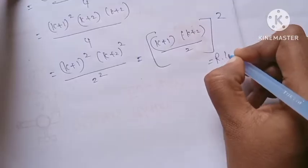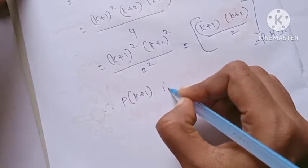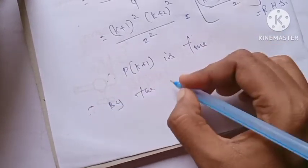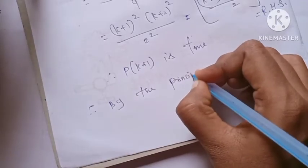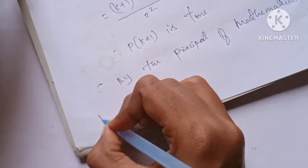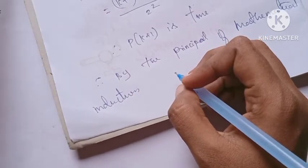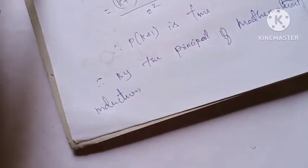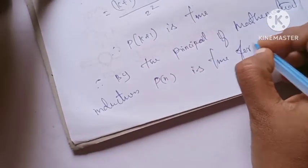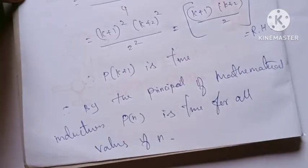LHS is equal to RHS. Therefore P of k plus 1 is true. By the principle of mathematical induction, P of n is true for all values of n.